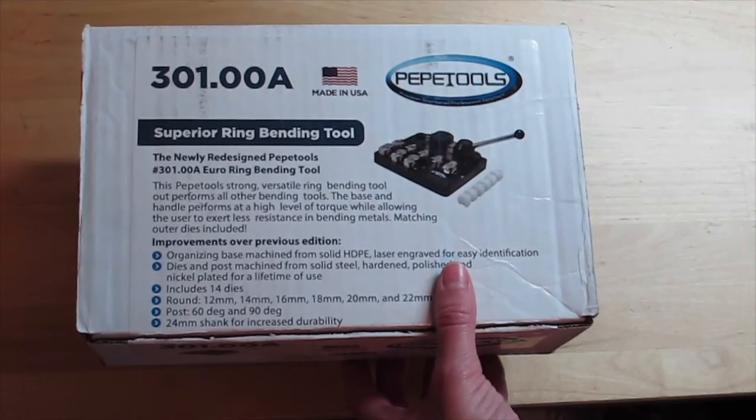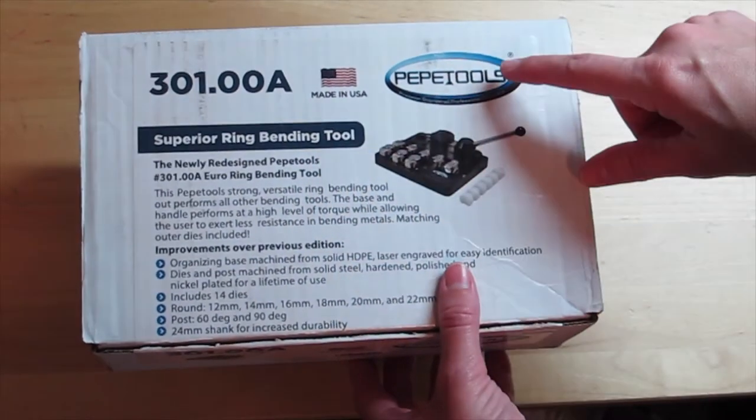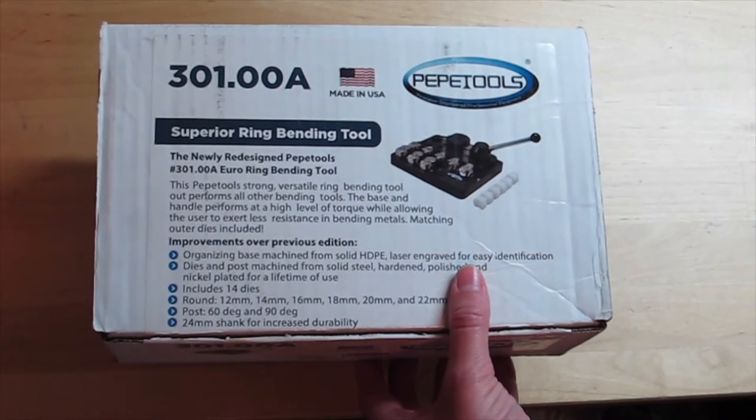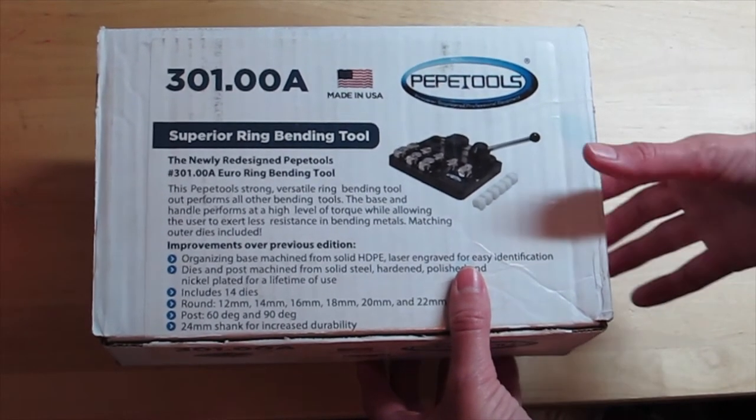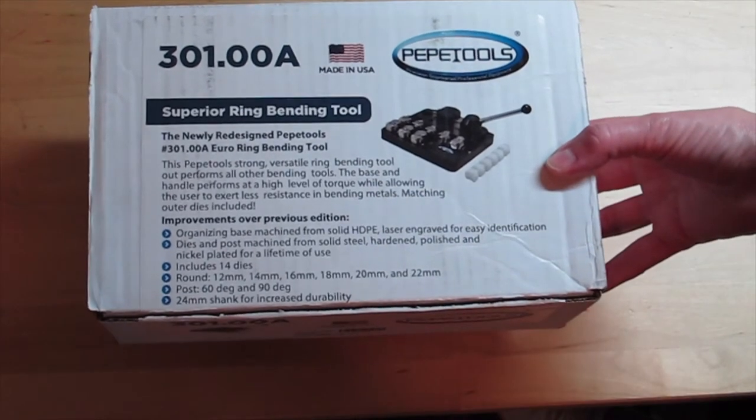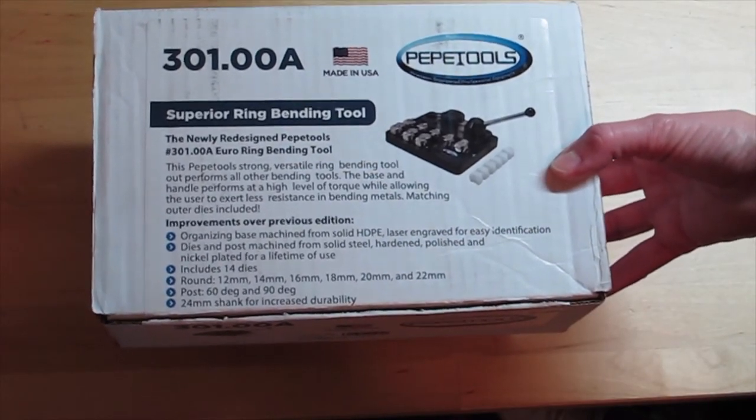Okay guys, here we are with the Superior Ring Bending Tool from Pepe Tools and I want to show you all the things that we can do with this. I've been using this all summer, especially with sterling silver square wire and I just love working with it.